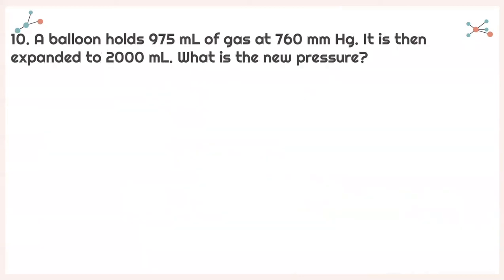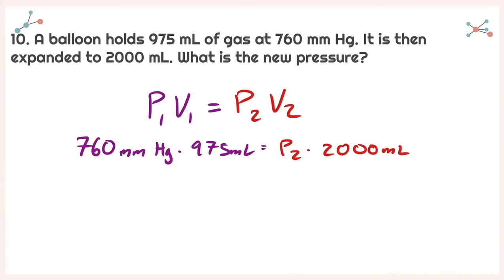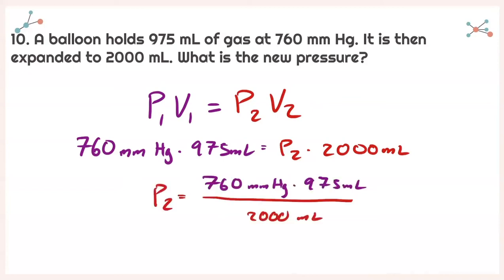Last one: a balloon holds 975 milliliters of gas at 760 millimeters of mercury, then is expanded to 2,000 milliliters. What is the new pressure? Same equation: P1 times V1 equals P2 times V2. Plugging in everything given and isolating P2: 760 millimeters of mercury times 975 milliliters divided by 2,000 milliliters. Plugging into my calculator with sig figs, I get a final pressure of 370 millimeters of mercury.